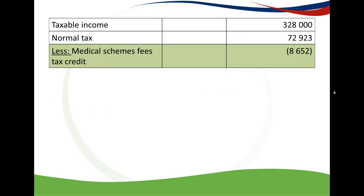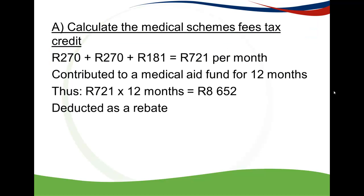To put it into perspective: you take your taxable income, calculate your normal tax (refer to the podcast on how to calculate tax per tax tables), and then you deduct your age rebates. Then you go and deduct your medical schemes fees tax credit, which we just calculated in the previous slide.